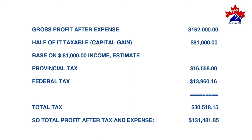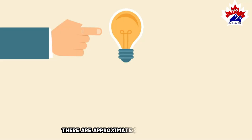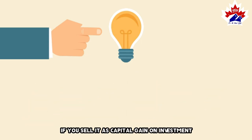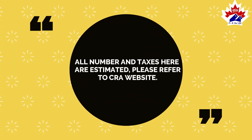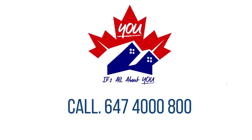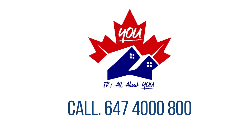Based on $81,000 income, estimated provincial tax is $16,558, and federal tax is $13,960.16. Total tax: $30,518.15. So total profit after tax and expenses: $131,481.85. There is approximately a $73,541.85 difference if you sell it as a capital gain on investment versus doing an assignment sale. All numbers and taxes here are estimated — please refer to the CRA website for more details. If you want to find out more, call You Group at 647-4000-800.